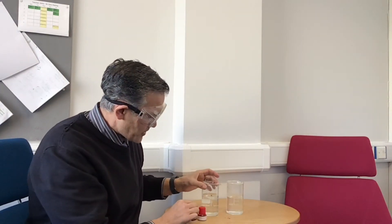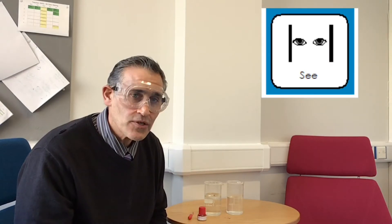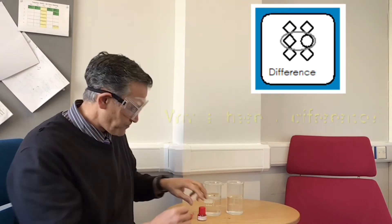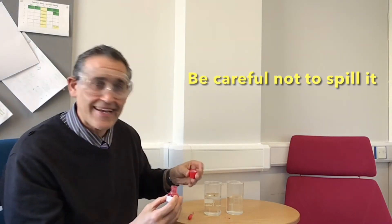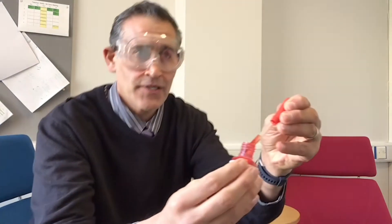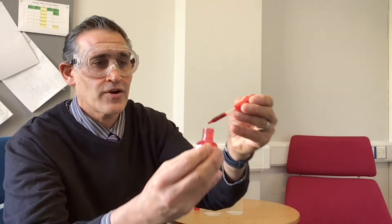In both beakers we've got water. I want you to see what happens when I put the food coloring into the water and to see if there's a difference — and if there is a difference, why is there a difference? I'll open the lid of the food coloring — be careful because this does stain everything. I'm going to squeeze my dropping pipette and suck up some bright red food coloring. Notice what happens as I put some into this one.